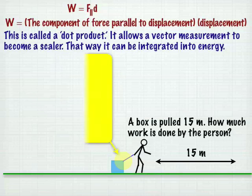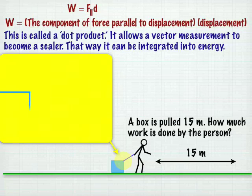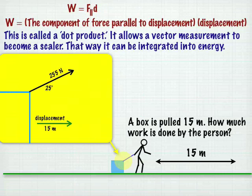So let's say we have a box and it's pulled 15 meters. We want to figure out how much work is done by the person. If we look closely at the rope attached to the box, we can see that it's 255 newtons at a 25 degree angle with the horizontal, and the displacement is 15 meters horizontally.